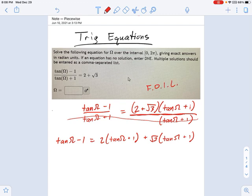So this is going to be 2·tan(Ω) + 2 + √3·tan(Ω). Hope you don't mind seeing a radical in front of a trig function. That's going to happen from time to time. So I get all this stuff on the right. What's on the left? tan(Ω) - 1.